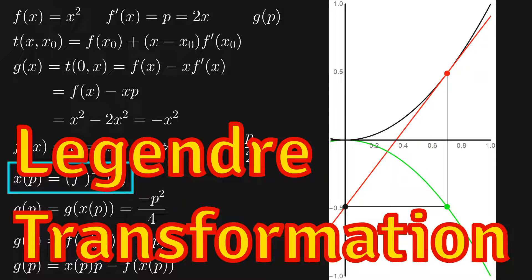A Legendre transformation is a way of transforming certain functions into new functions while retaining all of the information contained. As a physicist, your first encounter with Legendre transformations is probably either in thermodynamics or in theoretical mechanics. But let's first look at the purely mathematical aspects.